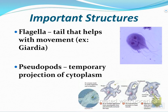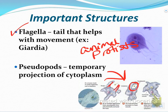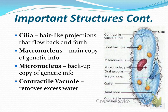Some important structures of protists: the flagella is a tail that helps with movement, found in animal-like protists. A pseudopod is a temporary projection of cytoplasm — the protist sticks out these ends and collapses around a food item, engulfing it inside. Cilia is like hair, similar to pili on prokaryotes — little hairs that flow back and forth.